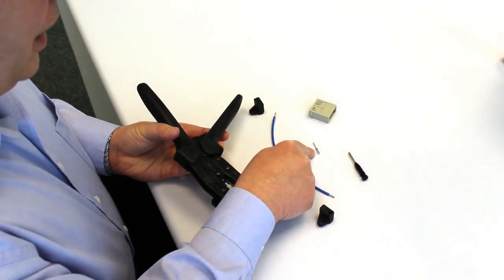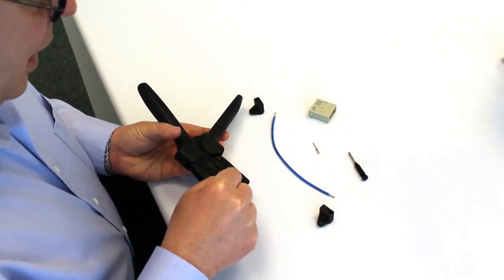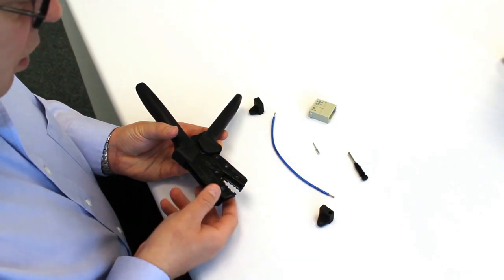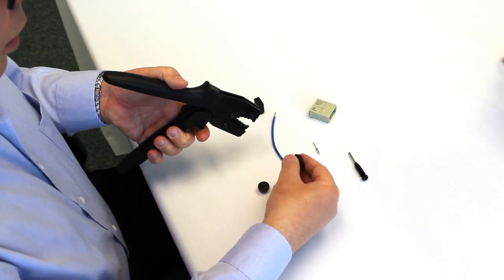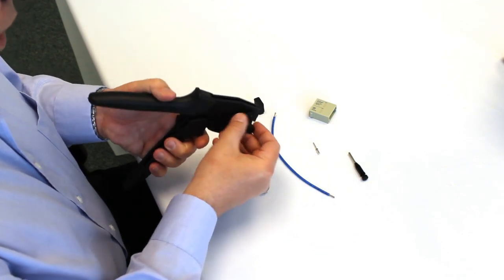This is a Han-D crimp contact and we're going to crimp this contact in this tool to 16 gauge wire. First of all, select the correct locator. In this case it's the D locator with the D at the end for the Han-D crimp contact.